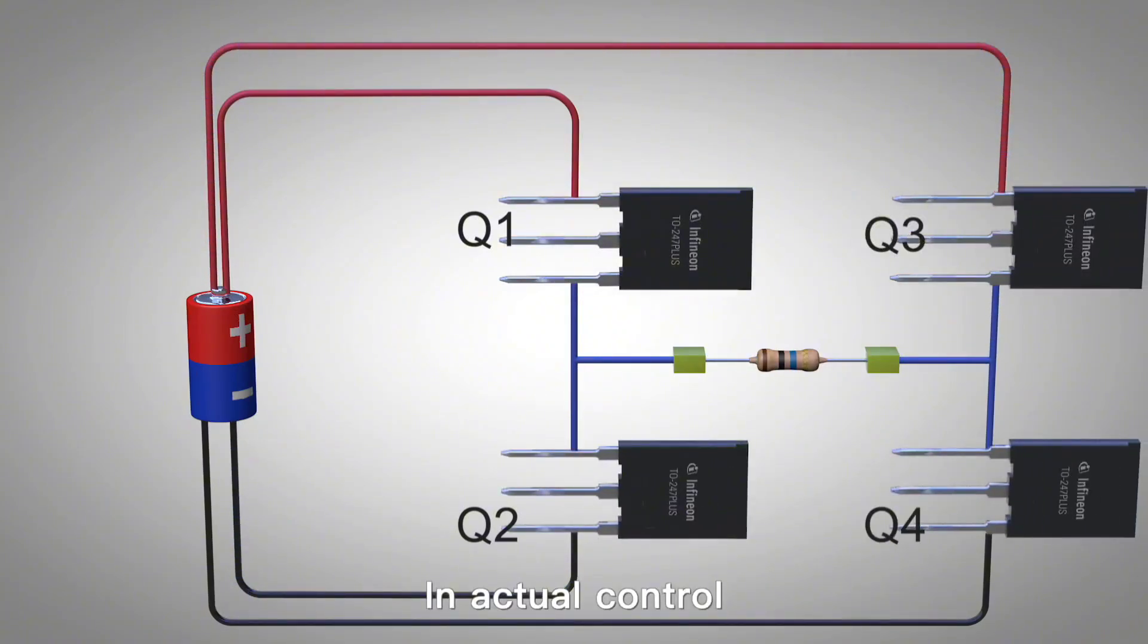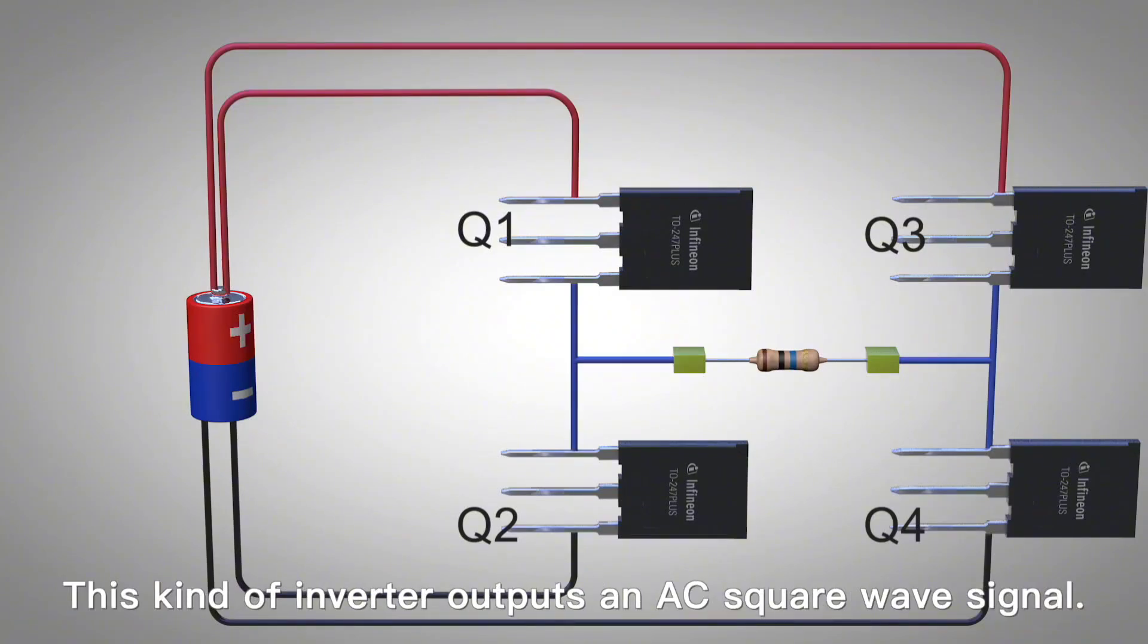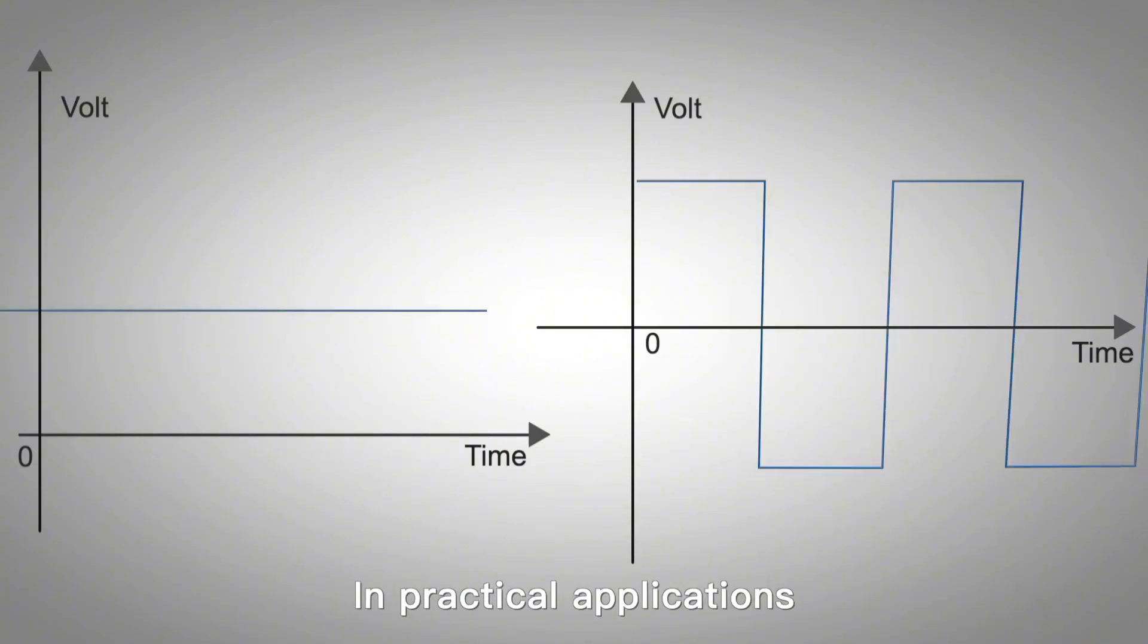In actual control, the four switches use four transistors. Q1 and Q4 work simultaneously, Q2 and Q3. Two groups work simultaneously and alternately. This inverter outputs an AC square wave signal.